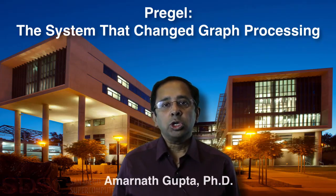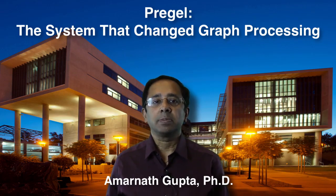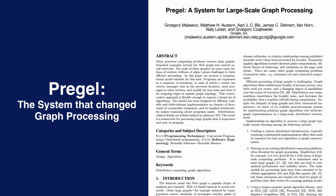In 2010, Google published a paper outlining a system that they had been working on. This publication about a system called Pregel has been one of the most influential publications on large-scale graph computing. To show how the Pregel system is programmed, we present the published code of Google's most famous algorithm, the PageRank.